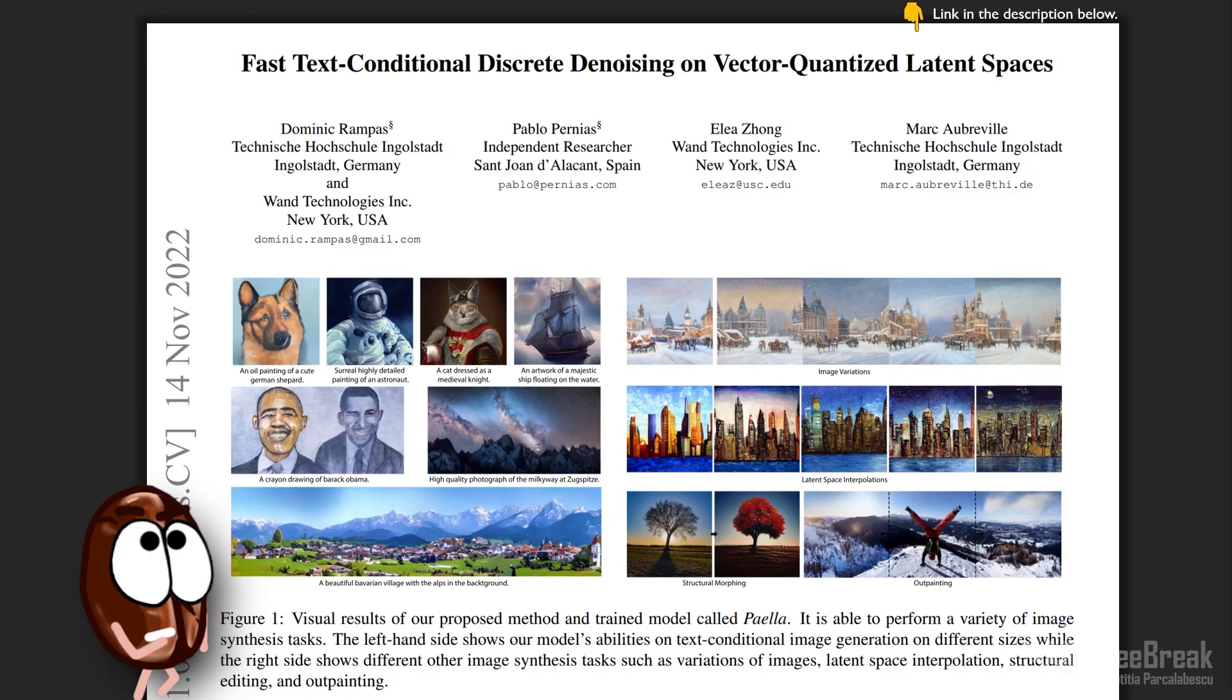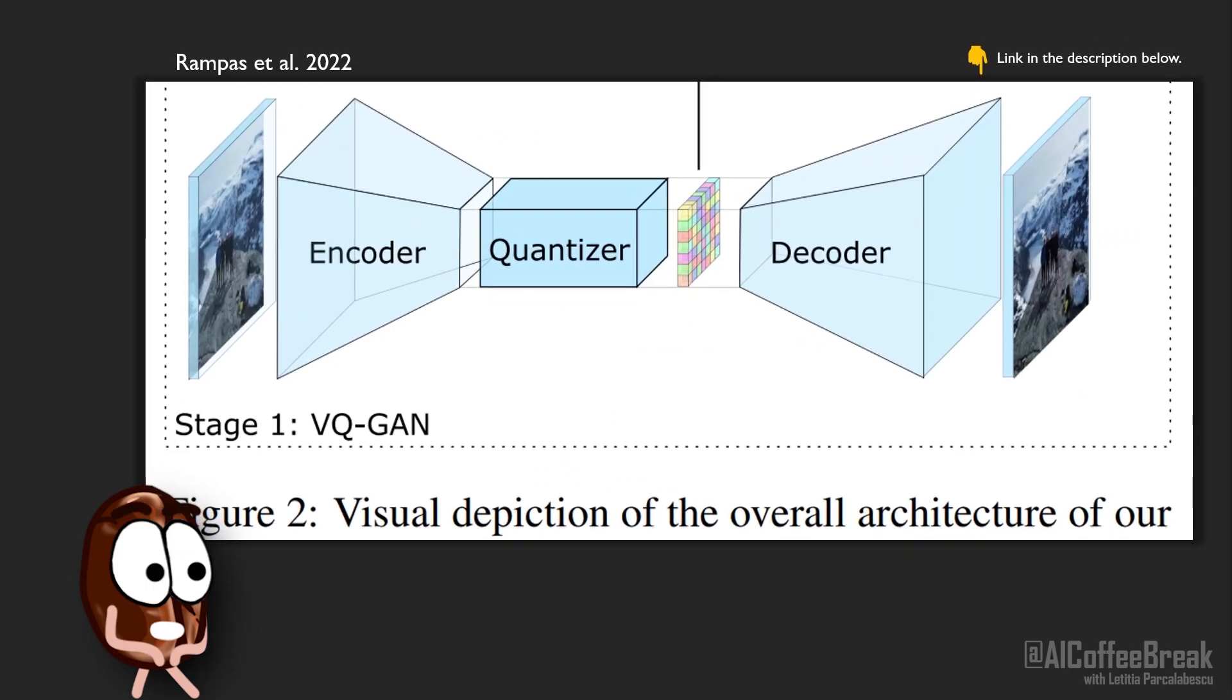How does it do it, then? The authors do the following: they take in the image and use a VQGAN to represent the image in a lower dimensional space. A VQ what? Don't worry, Ms. Coffee Bean will explain the VQGAN in a nutshell.